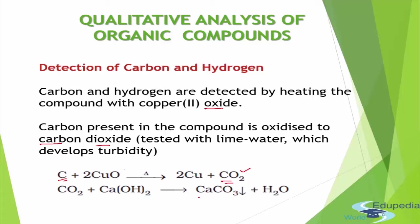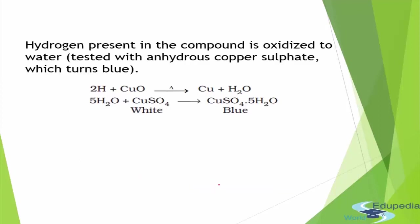If we pass more carbon dioxide, the turbidity will be removed because calcium carbonate converts into calcium bicarbonate, which is soluble in water. Next, whatever hydrogen was present in the compound will be oxidized to water, so we now need to confirm that the compound formed is indeed water.